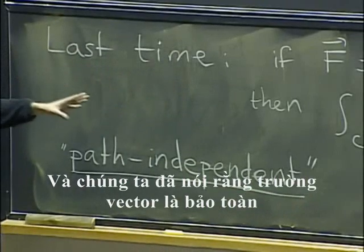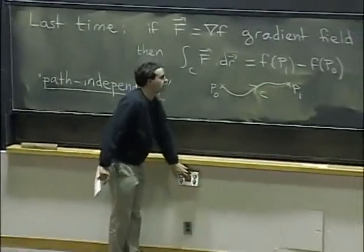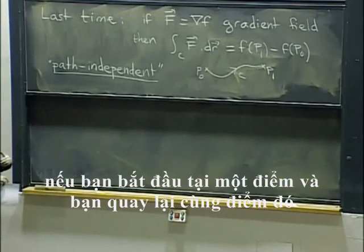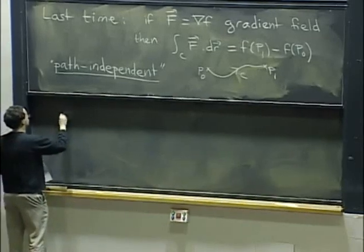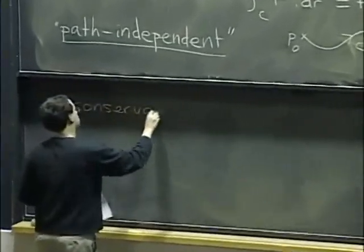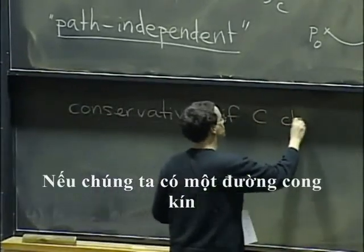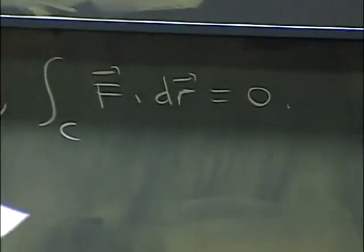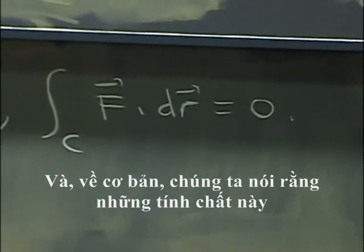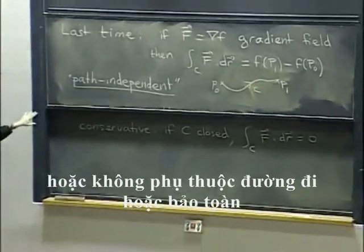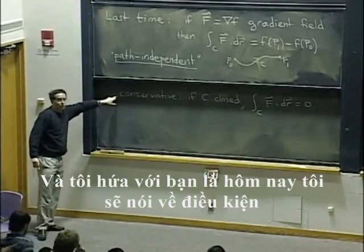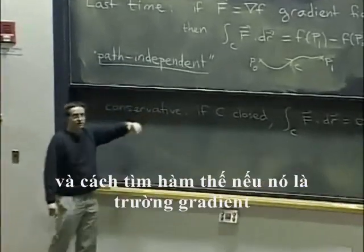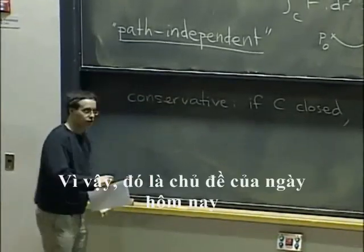We also said that the vector field is conservative, because of conservation of energy, which tells you if you start at a point and you come back to the same point, then you haven't gotten any work out of that force. So if we have a closed curve, then the line integral for work is just zero. Basically, we say that these properties are equivalent: being a gradient field, being path independent, or being conservative. And what I promised is that today we would see a criterion to decide whether a vector field is a gradient field or not, and how to find the potential function if it is. So that's the topic for today.